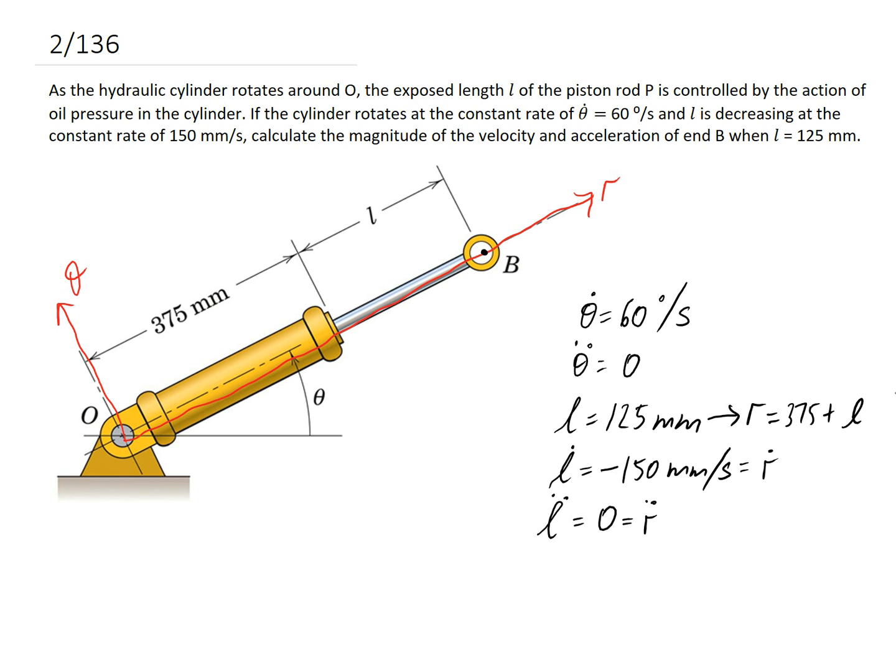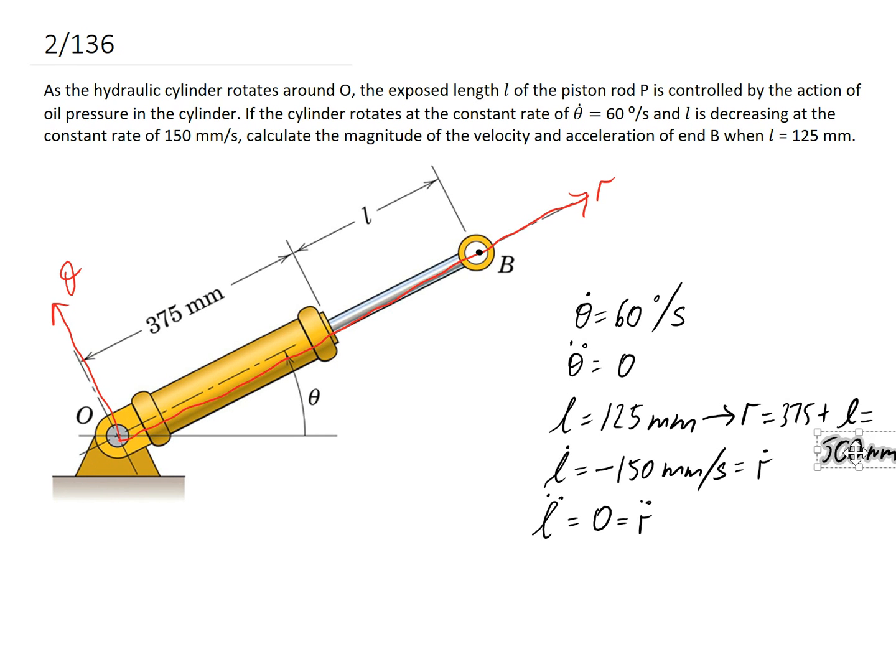Okay, so working that out, you find that your radius is equal to 500 millimeters. Alrighty, just move that back in case it didn't quite get in the frame.